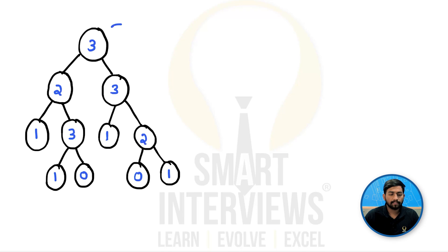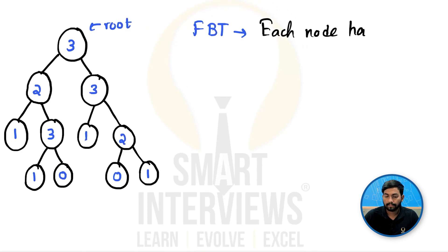You are given a tree like this. Let's say this is the root of the tree and this tree is a full binary tree. Full binary tree is a binary tree in which each node has either 0 or 2 children.